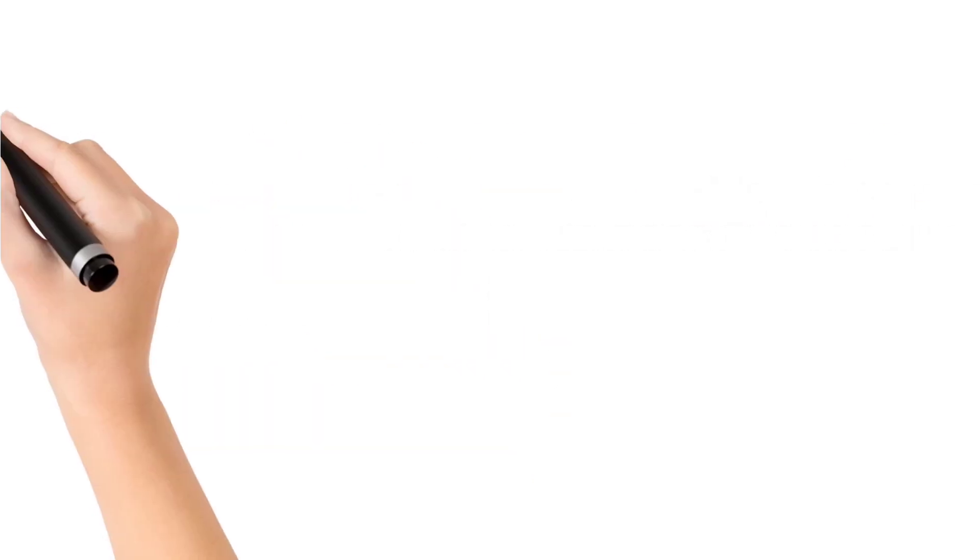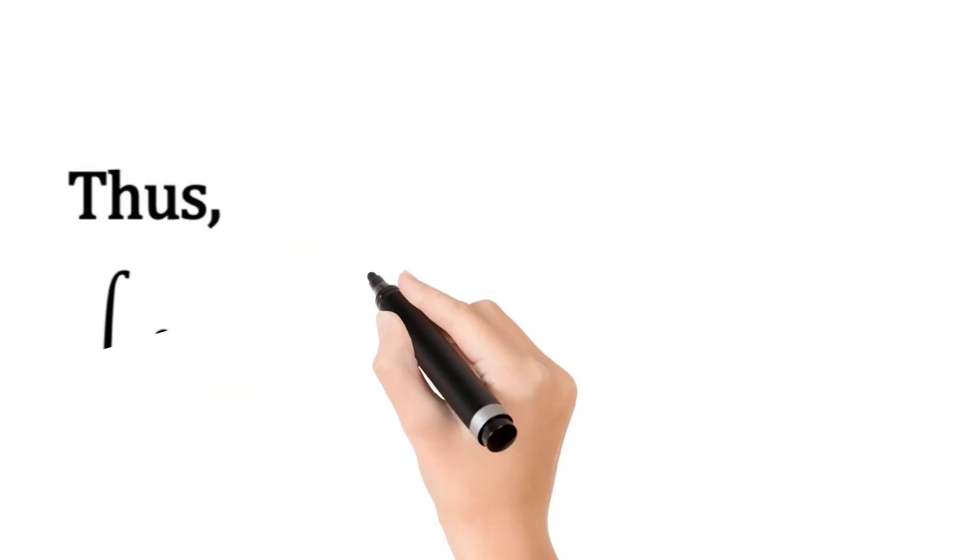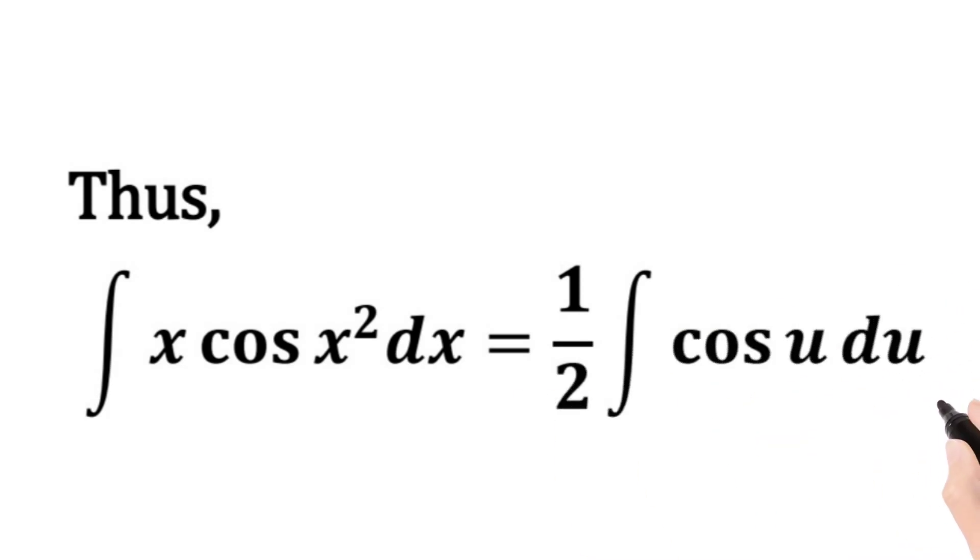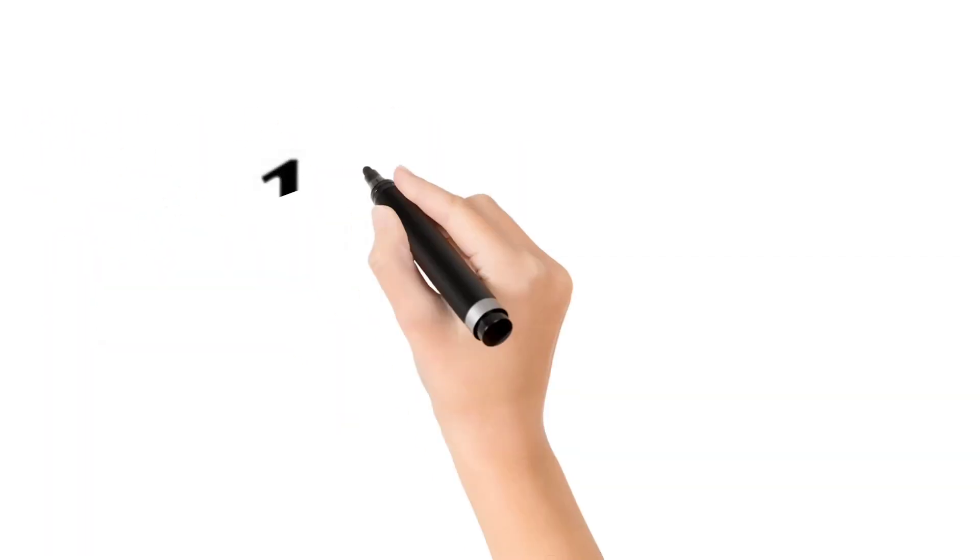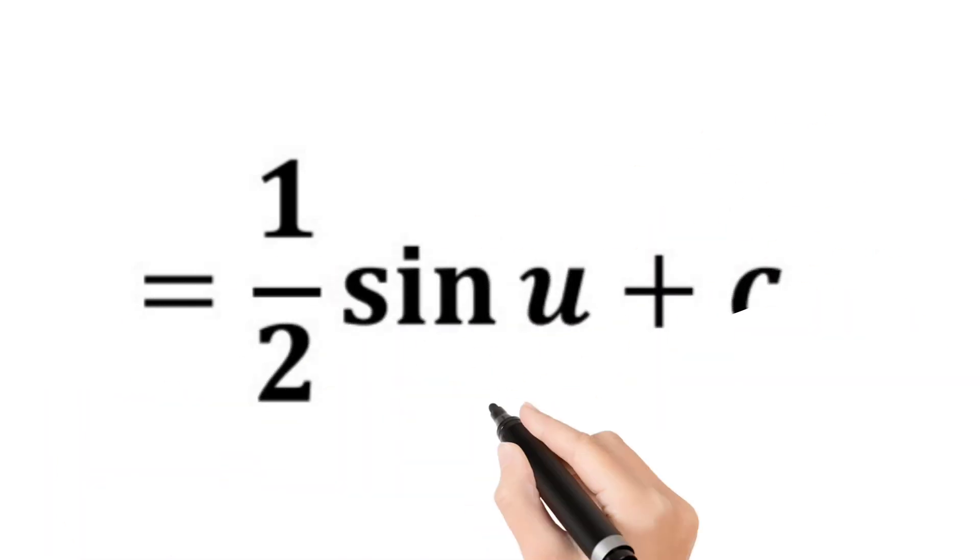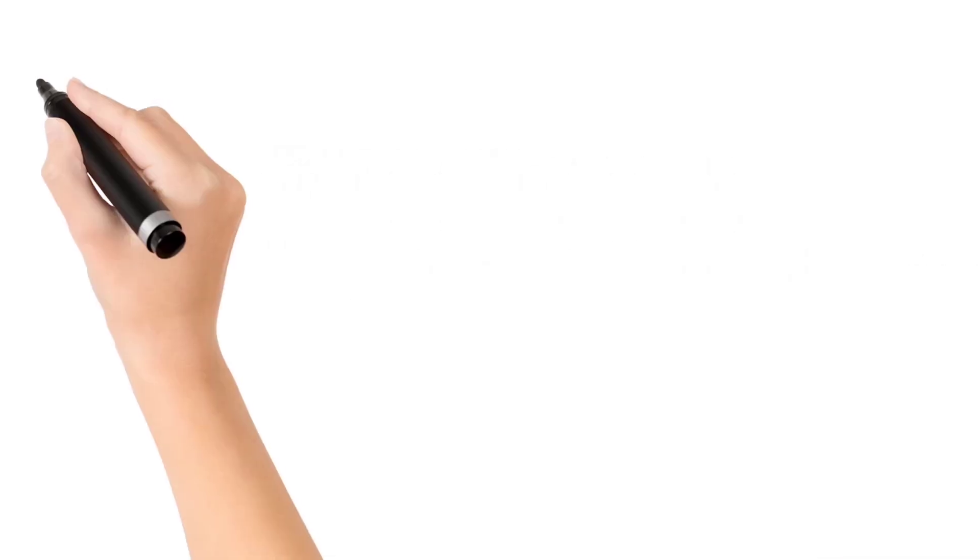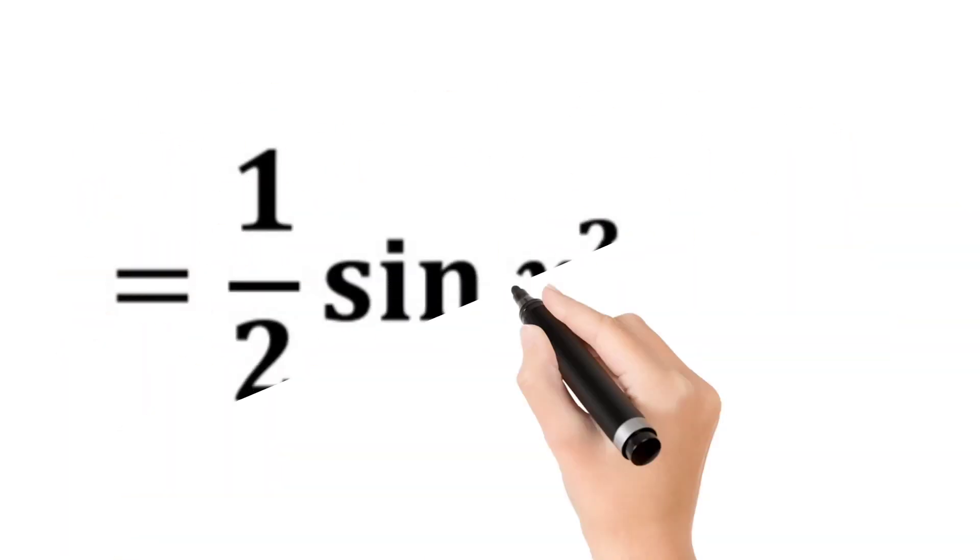So the integral x cos(x²) dx is equal to half times cos u du. And if we integrate, we will have half sin u plus c. c is the constant of integration. So since we let u be equal to x², our half sin u plus c now becomes half sin(x²) plus c.